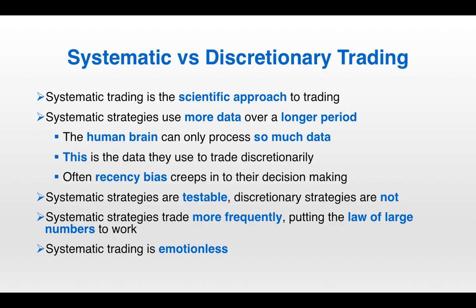Finally, systematic trading is emotionless. Let's say you had a really bad week and lost a lot of money — if you're a discretionary trader, you'll almost certainly be more risk averse. If you're a systematic trader, you have a quant trading strategy; you can just sit back and let the machine do its thing and you're not subject to emotions that can cause you to make bad trading decisions.